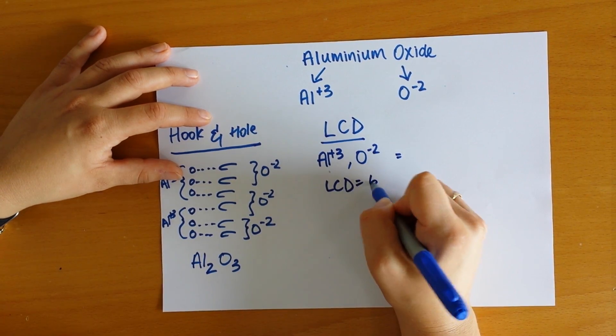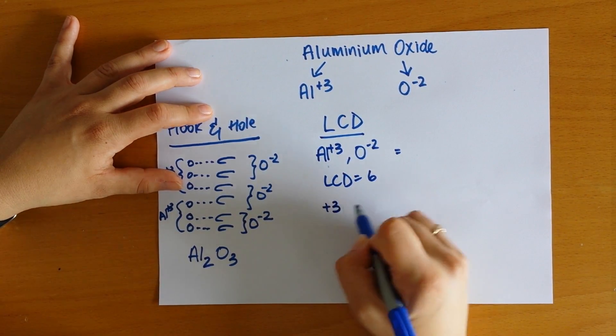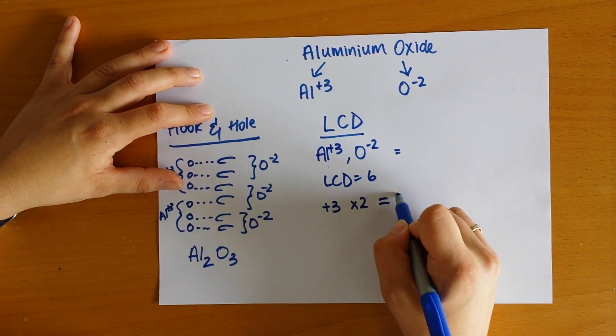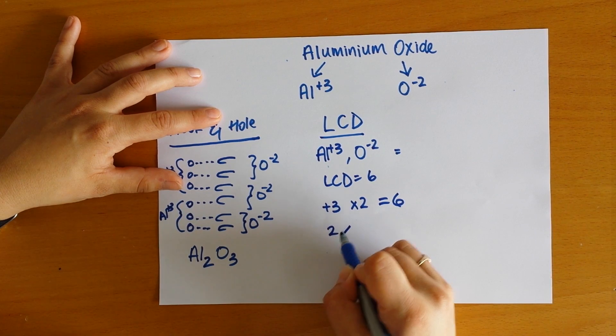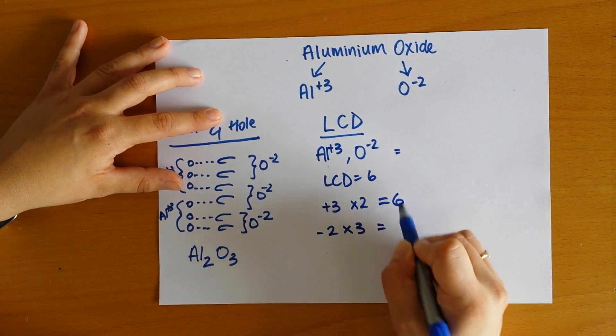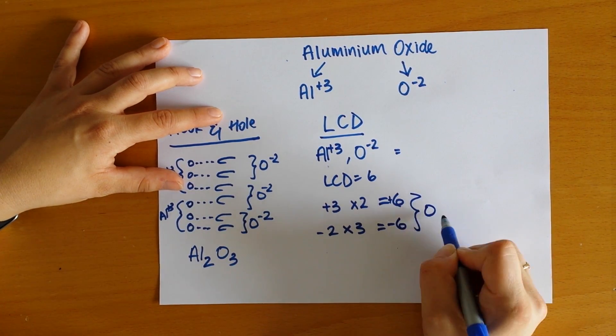So the lowest common denominator between three and two is six. So what this means is when I have a plus three charge, if I times that by two, that equals six. And if I times minus two by three, that gives me minus six. So those two cancel each other out.